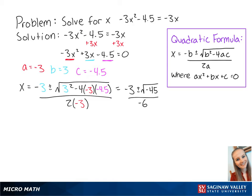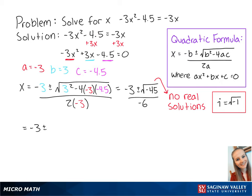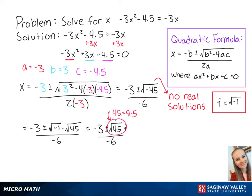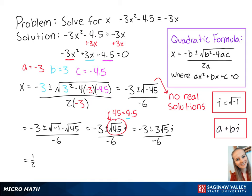Since there's a negative number underneath the square root, there are no real solutions for x. However, we can use i equals the square root of negative 1 to solve for a complex solution. So we can rewrite this as negative 3 plus or minus the square root of negative 1 times the square root of 45 over negative 6. The radical can be simplified because 45 equals 9 times 5 and the square root of 9 is 3. So this equals negative 3 plus or minus 3 times the square root of 5i over negative 6. If we write this in the form of a plus bi and reduce the fractions, we get 1 half plus or minus 1 half times the square root of 5i.